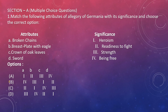First one: match the following attributes of Angoria of Germania with its significance and choose the correct option. They have given German words and we have to say the meanings, which come in History itself. Broken chains means being free. From the options given, option B is the correct answer because it has all four matching correctly.